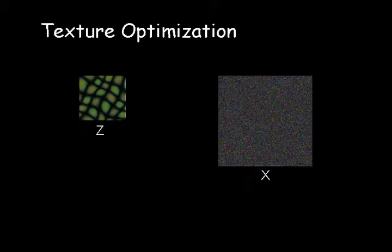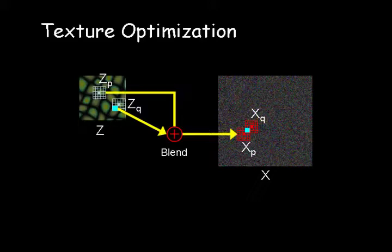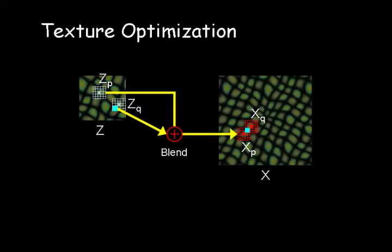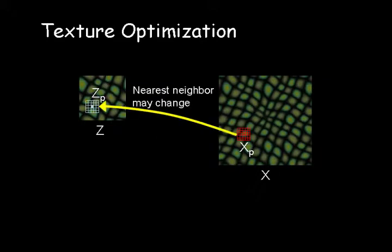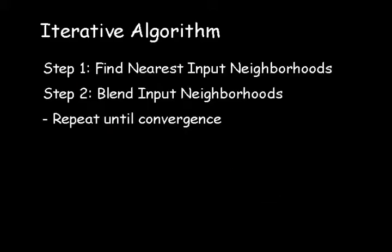We initialize the output with a random texture. During optimization, we compute the output texture that minimizes the energy defined over this initialization. Intuitively, we form output neighborhoods by blending multiple input neighborhoods. The nearest input neighborhoods may change after optimization of the output texture, leading to an iterative optimization algorithm. The two steps of finding nearest input neighborhoods and blending these neighborhoods are repeated until convergence.